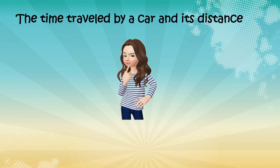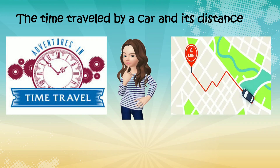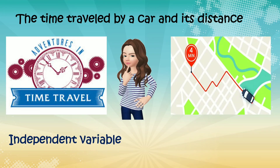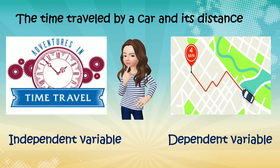Next — the time traveled by a car and its distance. So syempre, ang ating independent variable ay yung time ng travel ng car, at ang distance ay dependent variable. Syempre, kung mahaba yung oras ng paglalakbay, mas mahaba yung distance na mararating ng ating car.